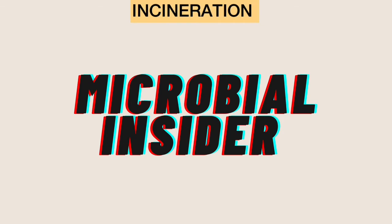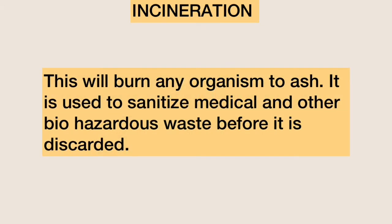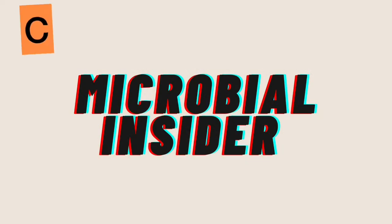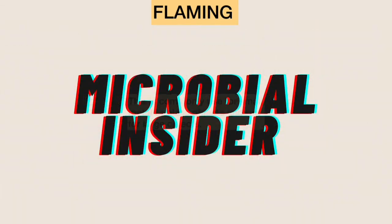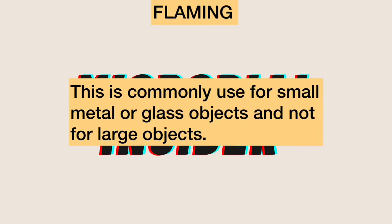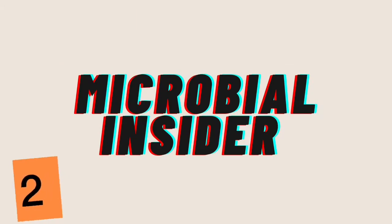Secondly, we have incineration. This will burn any organism to ash and is used to sanitize medical and other biohazardous waste before it is discarded. Lastly, we have flaming. Flaming is used to sterilize loops and straight wires in microbiology labs. Leaving the loop in the flame of a Bunsen burner or alcohol lamp until it glows red ensures that any infectious agent is inactivated. Flaming is commonly used for small metal or glass objects, and not for large objects.